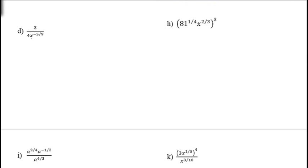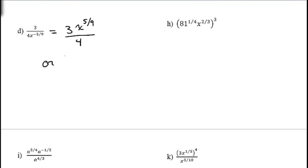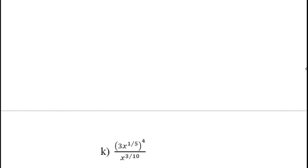For 3 over 4x to the negative 5/2: the negative exponent on x means we move x up to the numerator, making the exponent positive 5/2. The 4 stays in the denominator since only x carried the negative exponent. This can also be written as 3/4 times x to the 5/2.